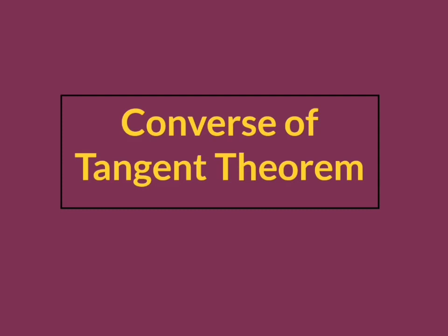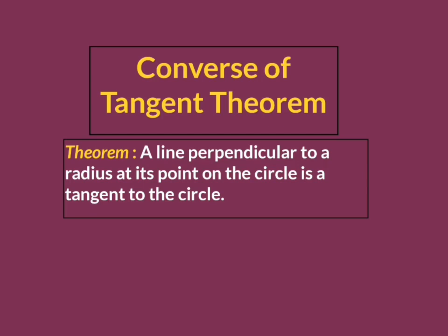The tangent theorem tells us that a tangent at any point of a circle is perpendicular to the radius at the point of contact. The converse statement is: a line perpendicular to a radius at its point on the circle is a tangent to that circle.